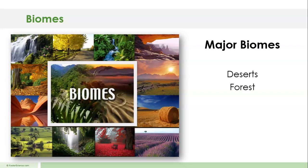There are desert biomes — and we can have different types of desert biomes — forest biomes with a few different types, grassland biomes which can be broken down into subcategories, tundra as another biome, and of course aquatic biomes, which include both freshwater and saltwater varieties.